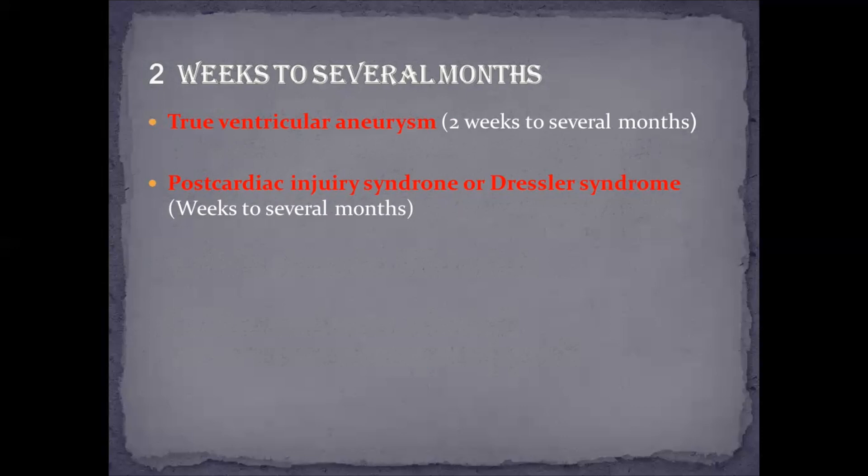A complication that can occur even several months after acute myocardial infarction is post-cardiac injury syndrome, or Dressler syndrome. It is an autoimmune reaction where cardiac antigens are released after myocardial injury, and deposition of immune complexes in the pericardium occurs, leading to inflammation — this is known as Dressler syndrome.